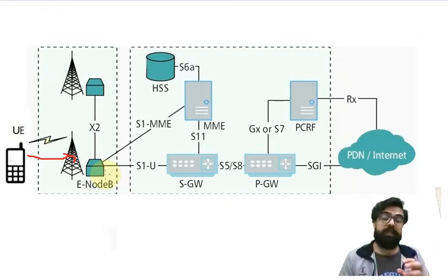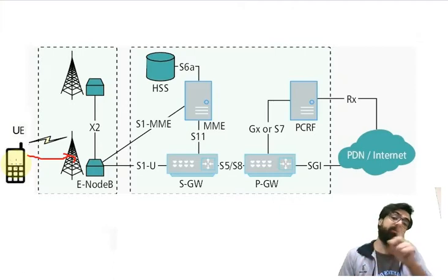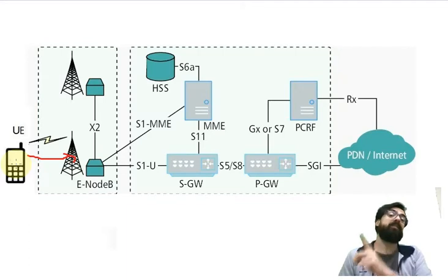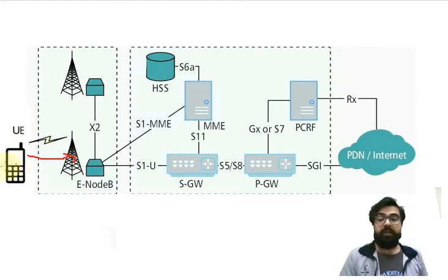The UE sends a connection request towards the eNodeB, and the eNodeB sends an RRC connection setup. The UE sends RRC connection setup complete, so we have the RRC bearer here.